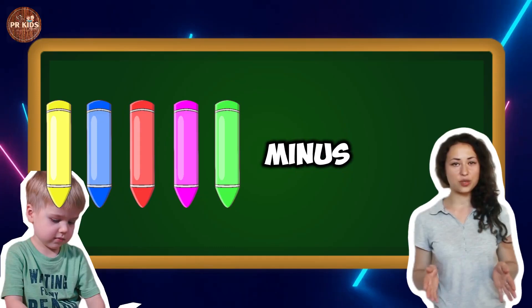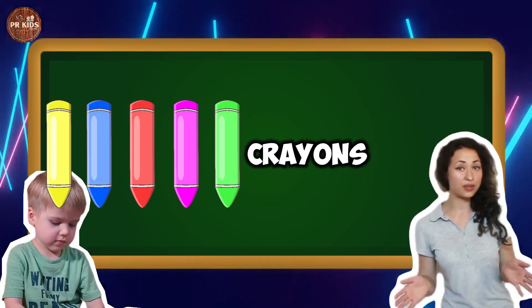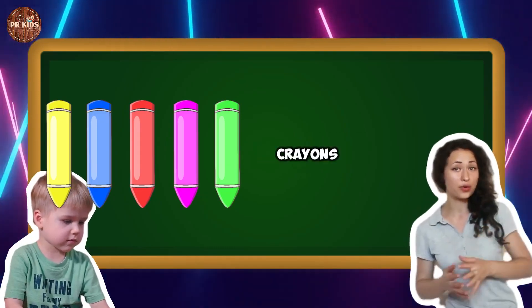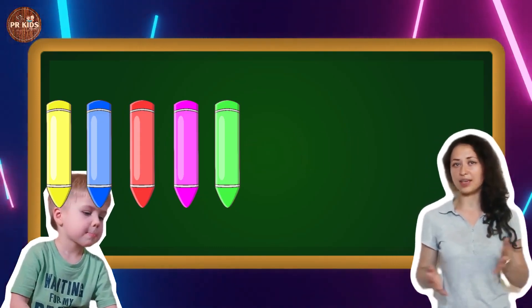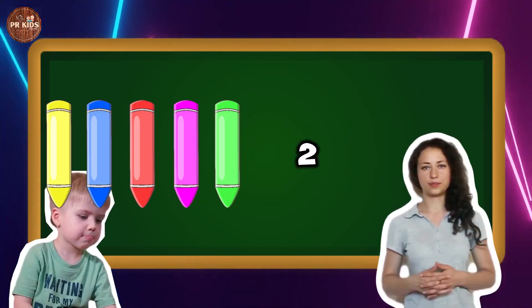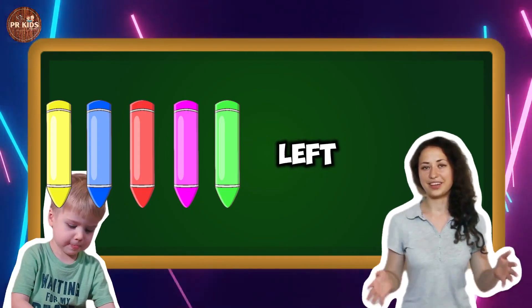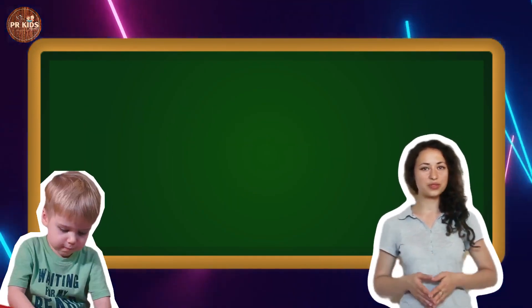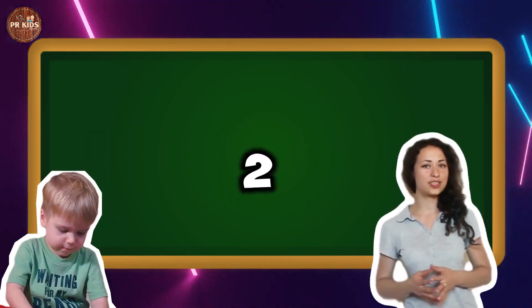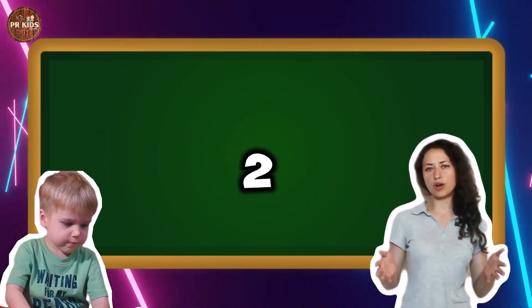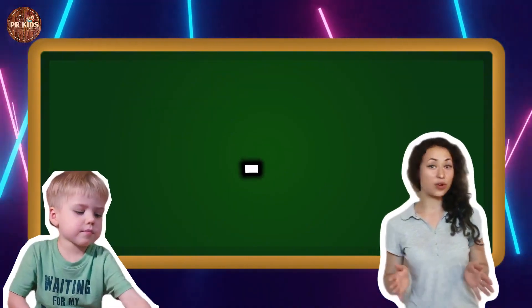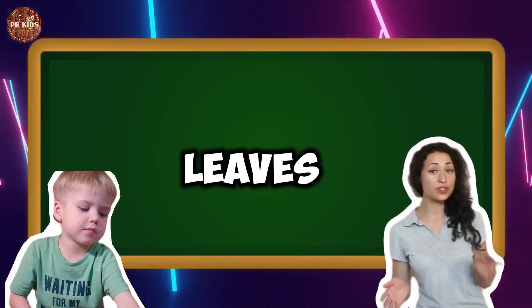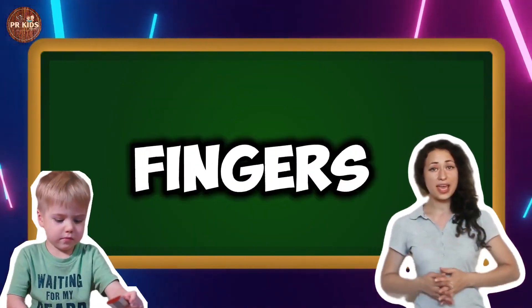Five crayons minus three crayons makes two crayons. One, two — two crayons left. Four minus two leaves two fingers. Three minus one leaves two fingers.